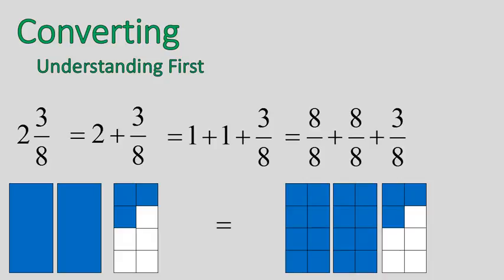And this is essentially what we're doing when we convert from a mixed number into an improper fraction. So instead of saying I have two whole rectangles and 3 eighths of a rectangle, you would say I have 19 eighths of a rectangle. It means the same thing.